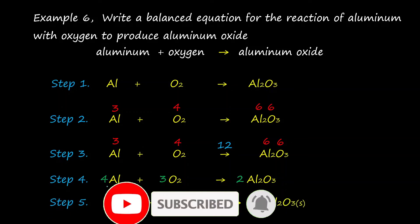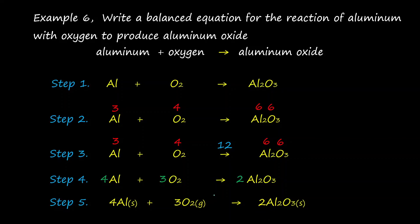The last step is to check whether the equation is balanced. For aluminium on the reactant side, four atoms; on the product side, two times two is also four — balanced. For oxygen, on the reactant side three times two is six; on the product side two times three is also six — balanced. Therefore the chemical equation is balanced. Specify the states: aluminium is solid, oxygen is gas, and aluminium oxide is also solid.